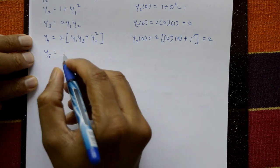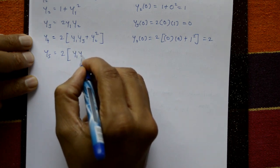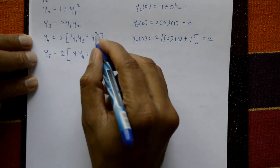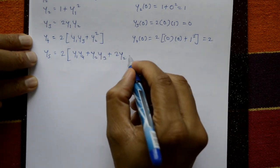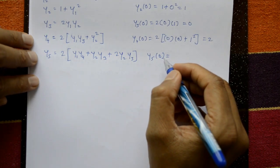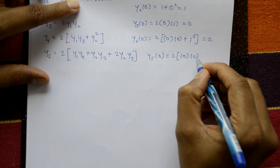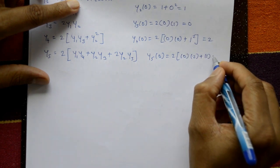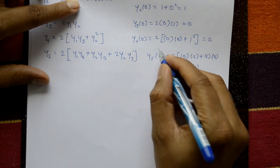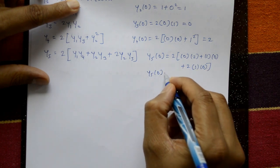For y5, differentiate y4 = 2·[y1·y3 + y2²] using the product rule: y5 = 2·[y1·y4 + y2·y3 + 2·y2·y3]. Put x = 0: 2·[0×2 + 1×0 + 2×1×0] = 0. So y5(0) = 0.